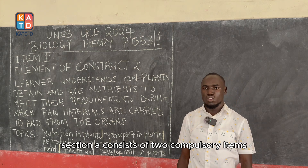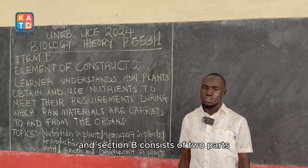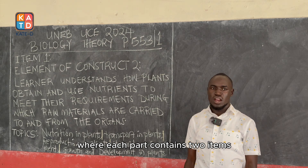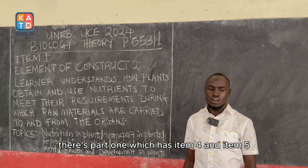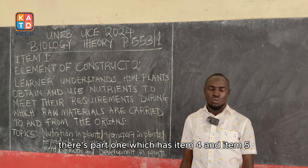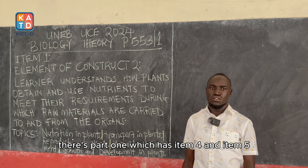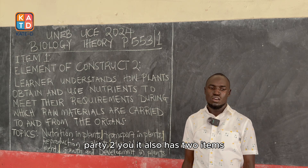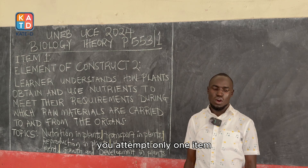Section A consists of two compulsory items, and section B consists of two parts, where each part contains two items and you only attempt one item. There is part 1, which has item 4 and item 5 — you attempt only one item. Part 2 also has two items, and you attempt only one item.